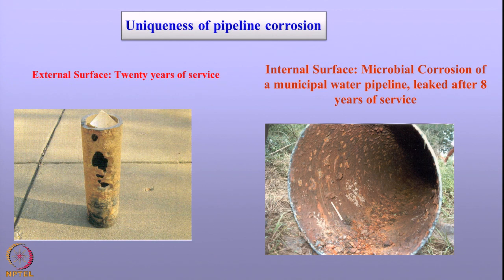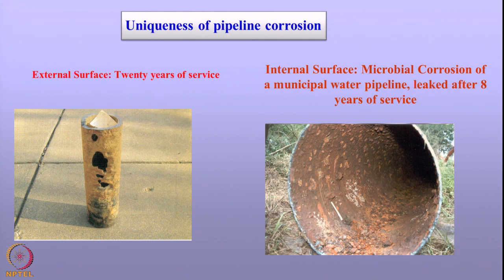Pipeline corrosion is unique in one aspect, because the pipeline faces two types of corrosion. One externally, depending upon the environment, be it soil or offshore seawater. Internally, it depends on the kind of commodities or products the pipeline transfers. The nature of corrosion in both cases — externally and internally — are different. Both of them affect the life of the pipelines, and the protective measures are different. The cathodic protection, as discussed in the last class, is concerned with the prevention of corrosion of the external surfaces. The internal surface corrosion will be dealt with separately.